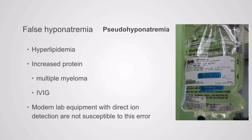We see pseudohyponatremia with increased lipids — hyperlipidemia — and increased proteins, usually immunoglobulins. You'll see this in multiple myeloma, Waldenström's macroglobulinemia, or with IVIG (intravenous immunoglobulin) therapy. Not every lab instrument is susceptible to this error; equipment using direct ion detection is not affected. You can call your pathologist to find out which method they use, or simply order a serum osmolality — if it's low, you have true hyponatremia; if it's normal or high, you have false hyponatremia.